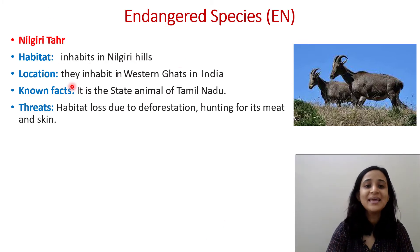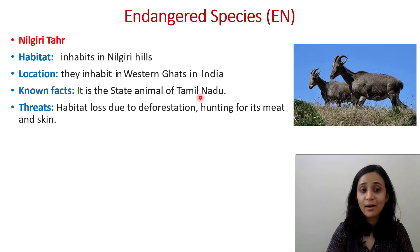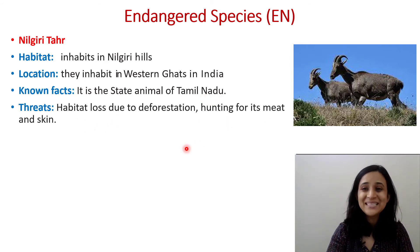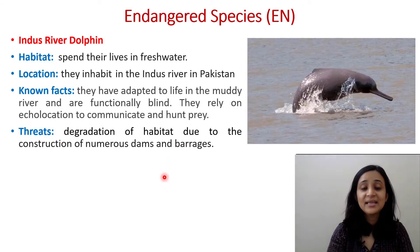Next is the Nilgiri Tahr, also under Endangered. It inhabits the Nilgiri Hills, located in the Western Ghats in India. It is the state animal of Tamil Nadu. Threats include habitat loss due to deforestation and hunting for its meat and skin.